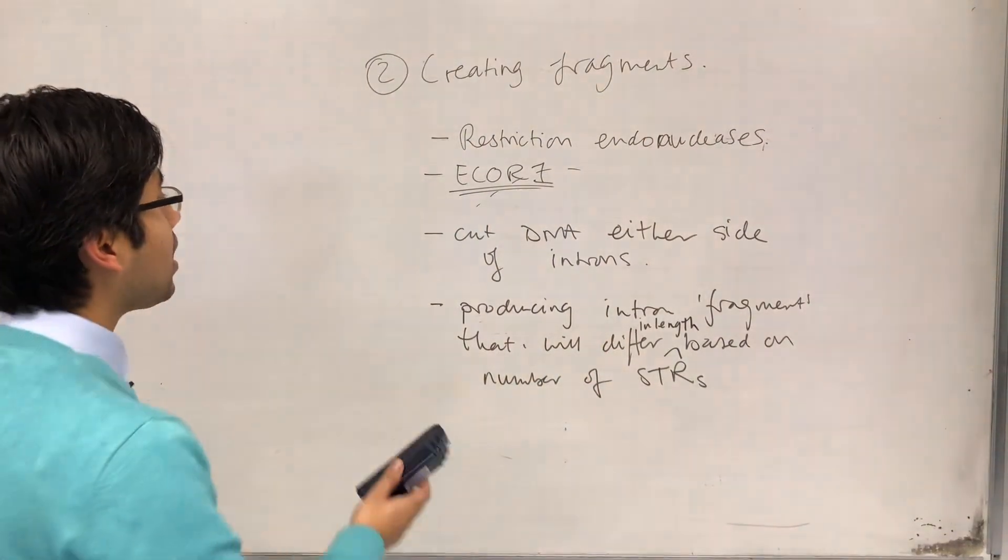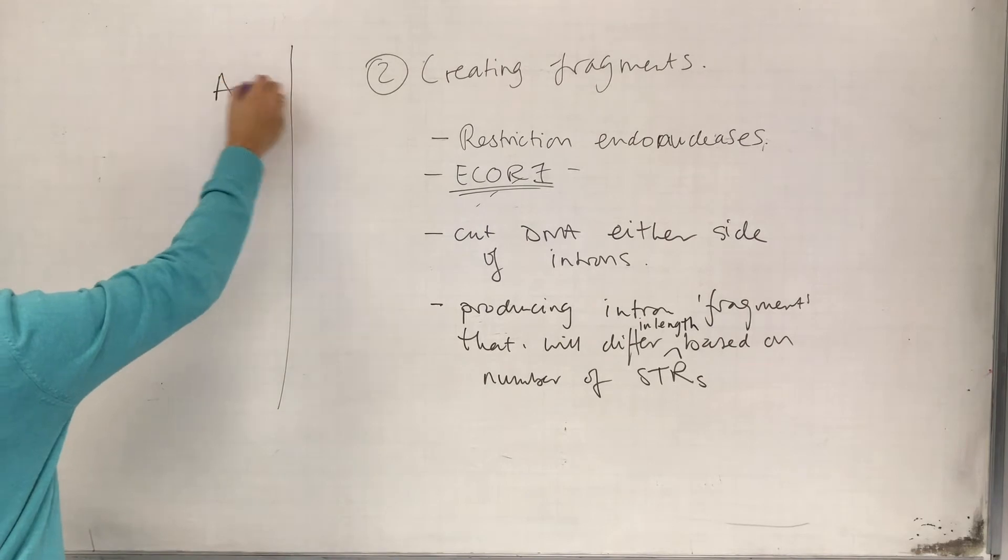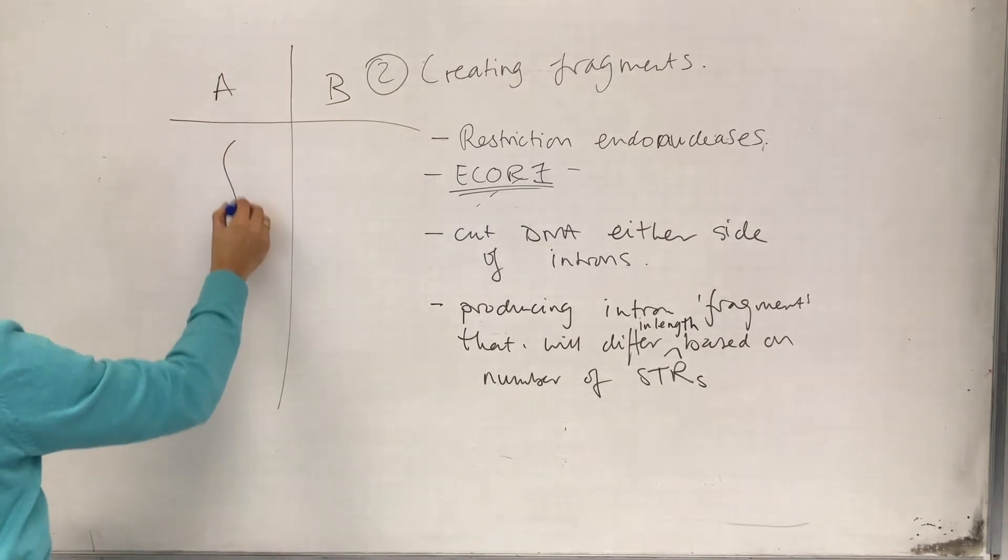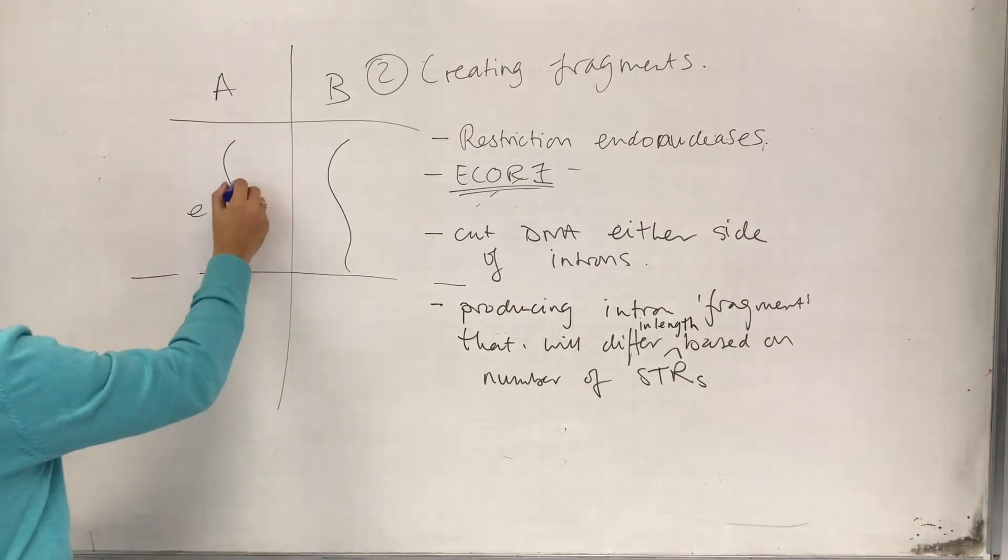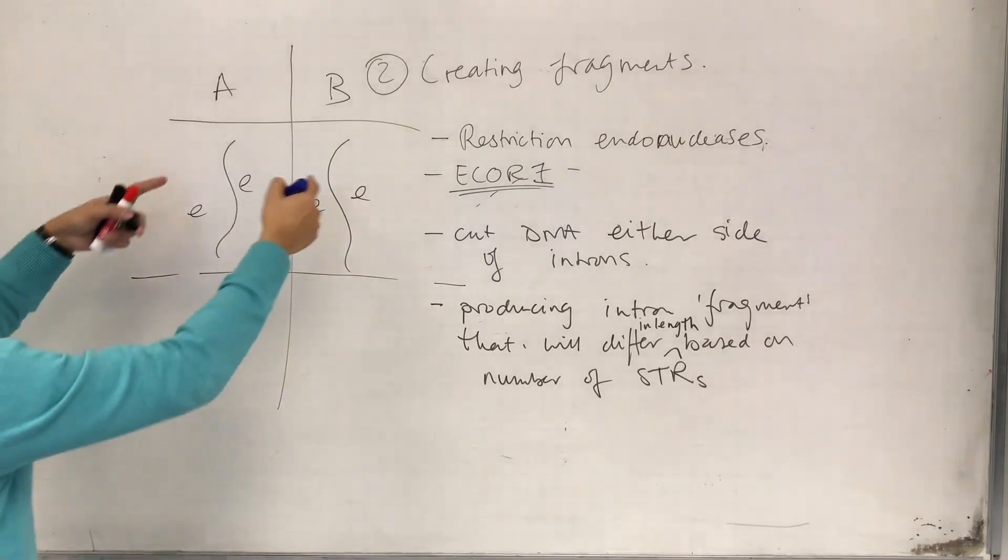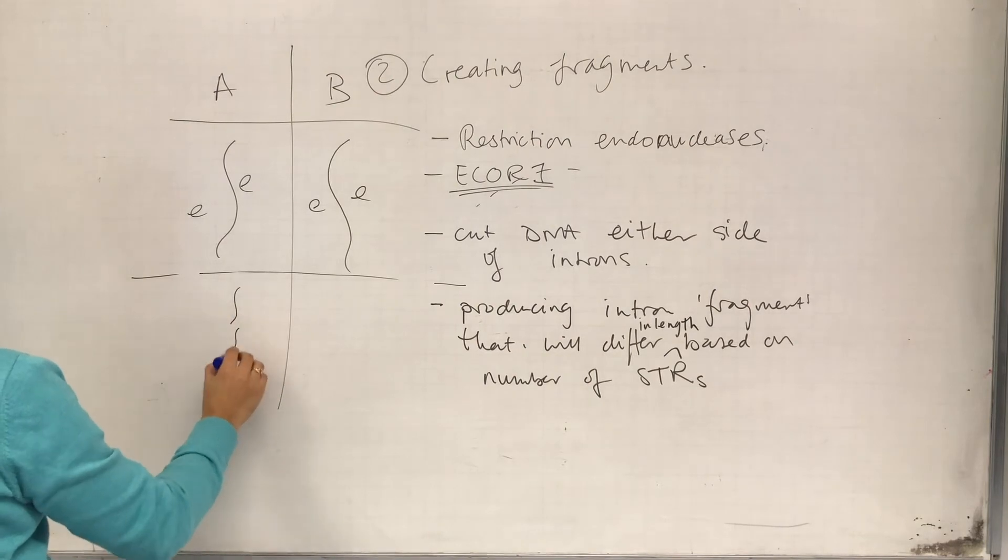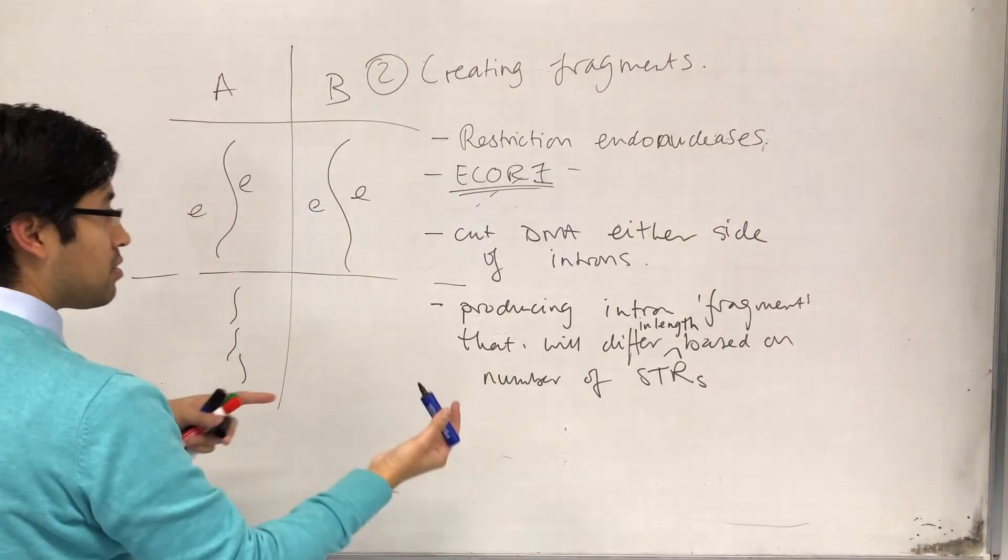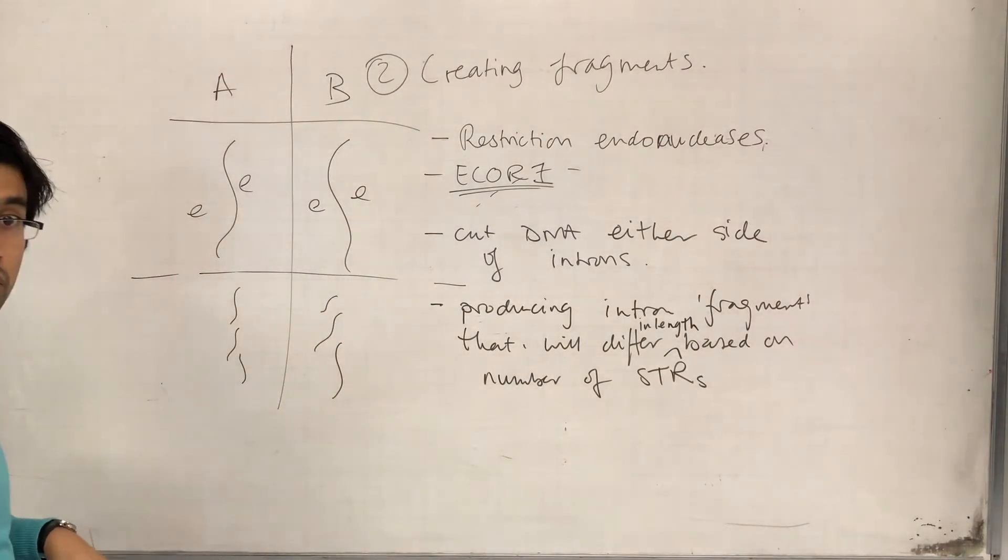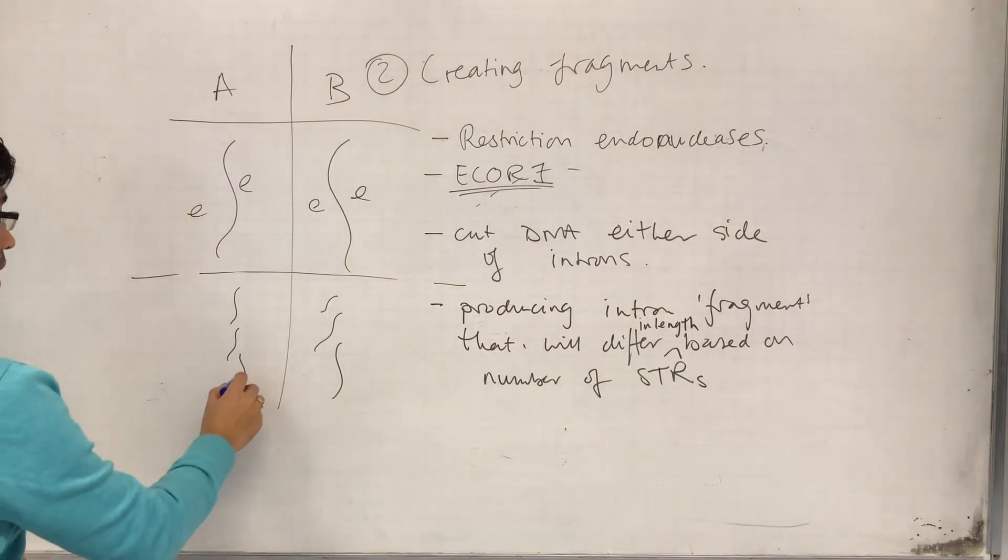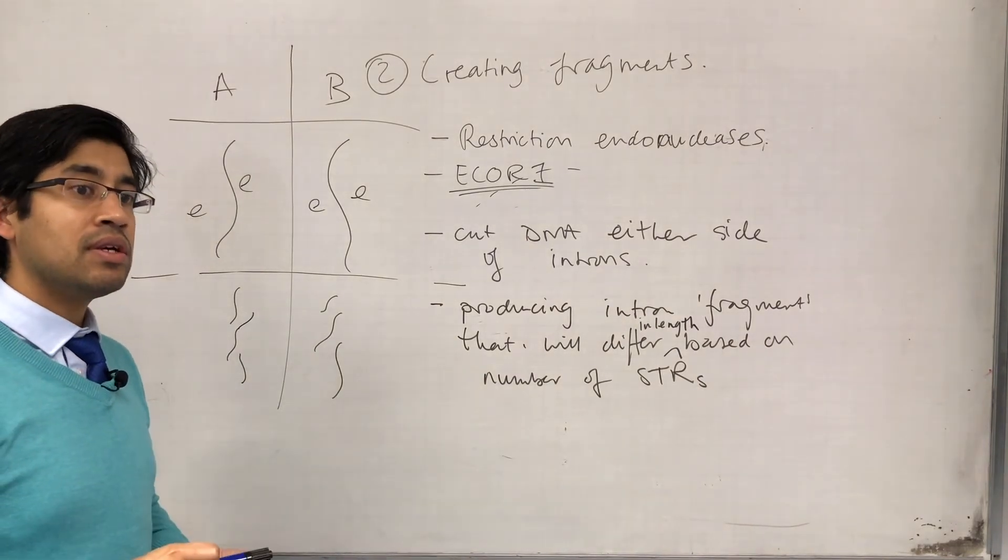So, there we have it. So now, what we have is we might have had, so if we had DNA from person A and DNA from person B, on the surface their DNA might look exactly similar, but once we treat them with restriction endonucleases, now it might cause the DNA to be digested in a way that because of their STRs are possibly different, it might produce differently sized fragments from both. And we must remember that differences in fragment length are based on STR repeat differences.